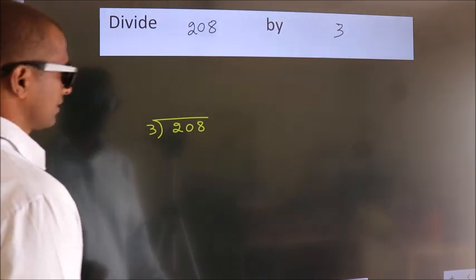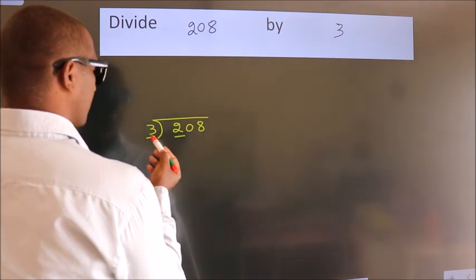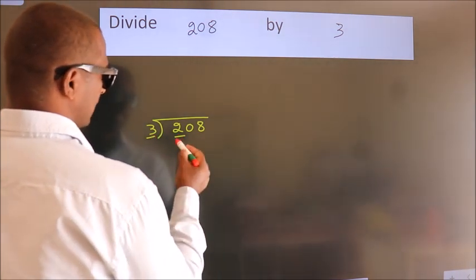Next, here we have 2. Here 3. 2 is smaller than 3, so we should take 2 numbers.